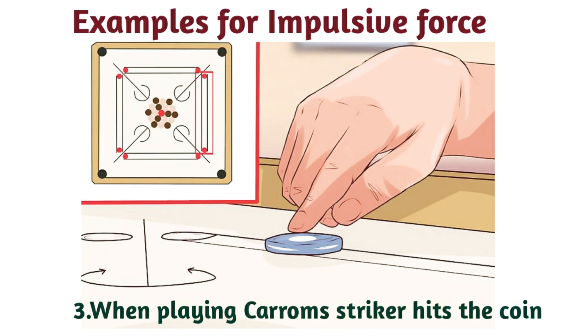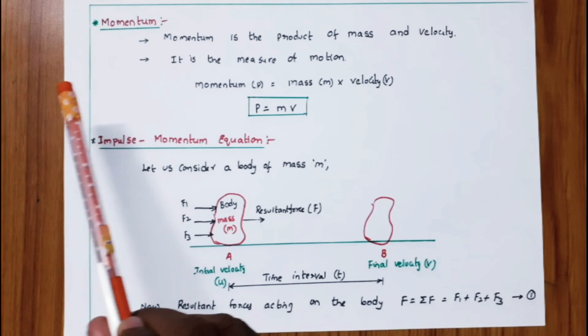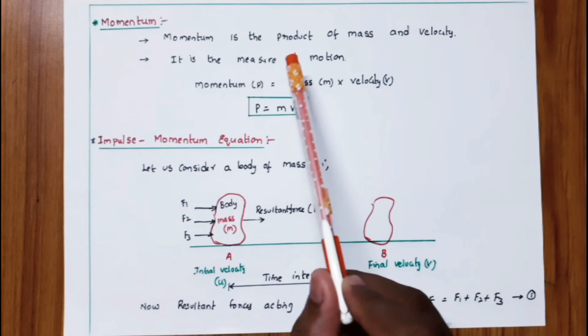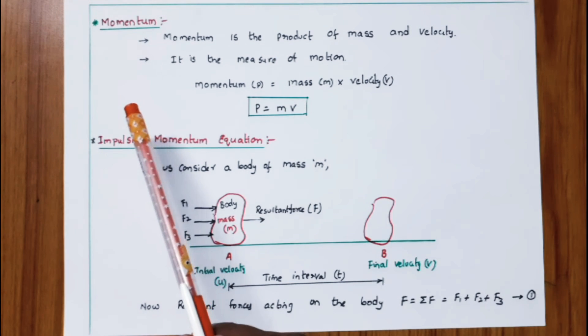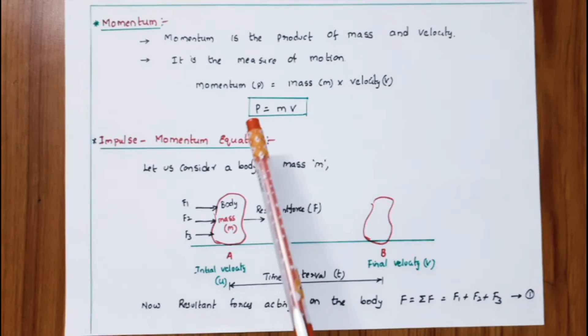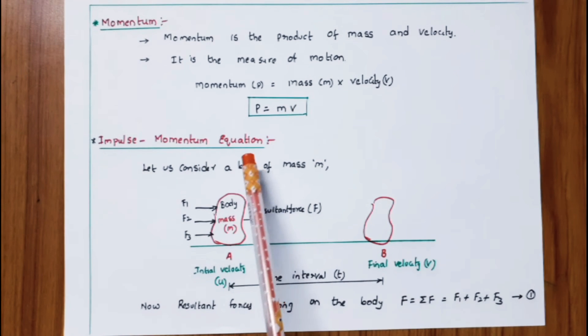Momentum is the product of mass and velocity. It is the measure of motion. Momentum p = mass × velocity, so p = mv, where m is mass and v is velocity.